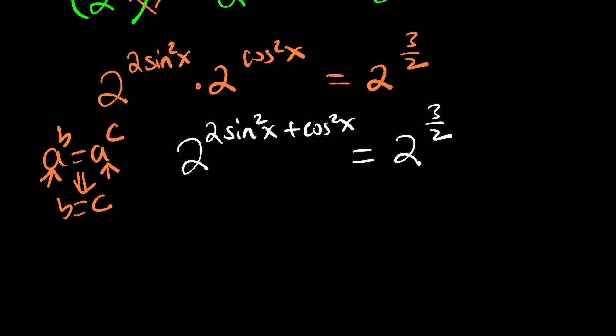From here, we can basically get 2 to the power, or just forget about the 2s at the base. We can just write the exponents, set them equal to each other, and that gives us the following equation. Do you like that? Okay, maybe you do, maybe you don't. But where do we go from here, right?